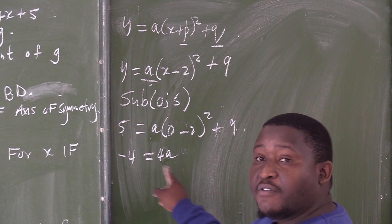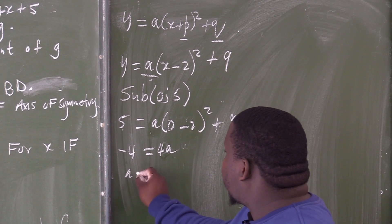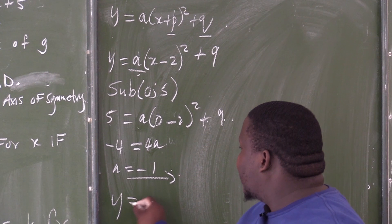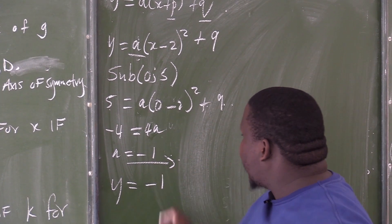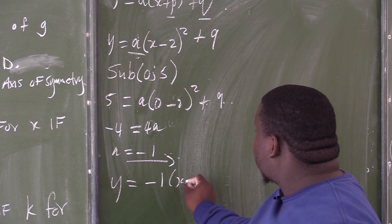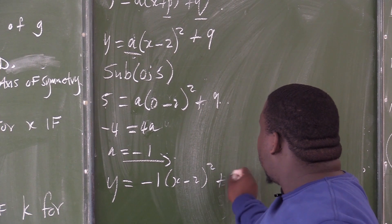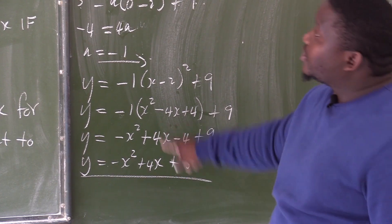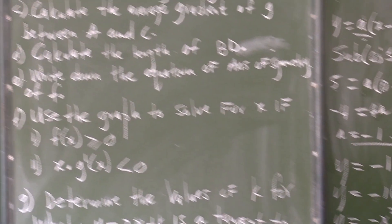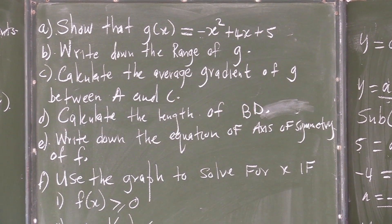Now, how to find a? I can divide by 4 on both sides. Then this will give us a, which is negative 1. y is negative 1. Now I know what a is. Open brackets, x minus 2 squared plus 9. If you look at this equation, it is the same as that one. I believe it is not done now — I see it proves it.